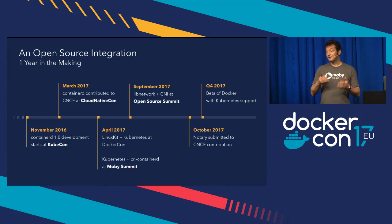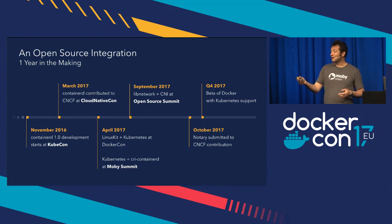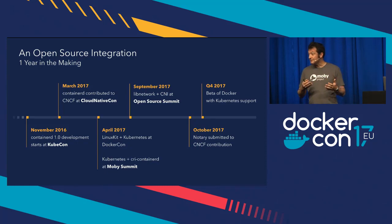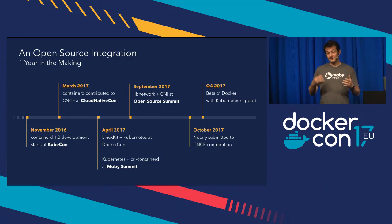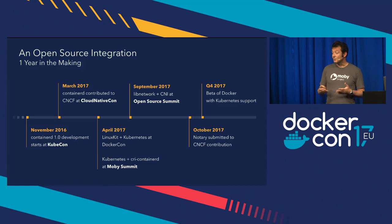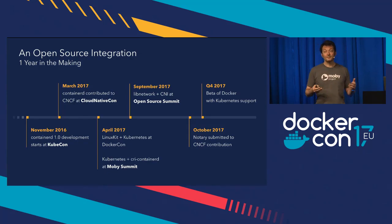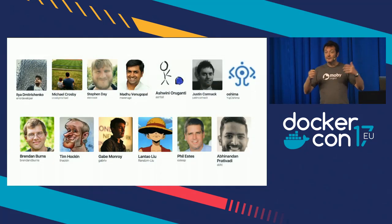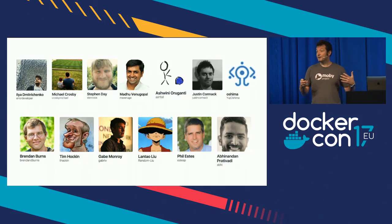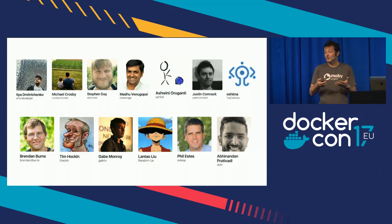Looking at the timeline: it started with Containerd 1.0, whose design came from requirements from the Kubernetes team about what would be an ideal runtime. Then came the donation of Containerd to CNCF, followed by LinuxKit and Kubernetes demoed at DockerCon last year. The CRI-Containerd work — integrating Containerd in Kubernetes via the CRI interface — is in alpha right now. LibNetwork and CNI work was demoed at OpenSource LA at the Mobi Summit a month ago. And the beta of Docker with Kubernetes support assembles all these projects together to build a platform.